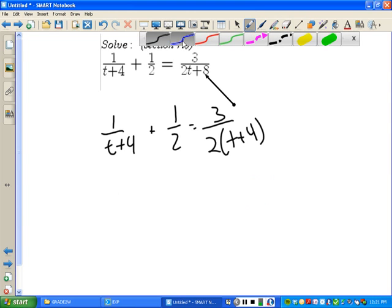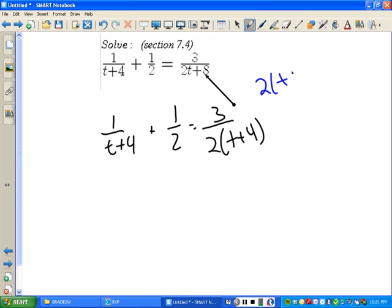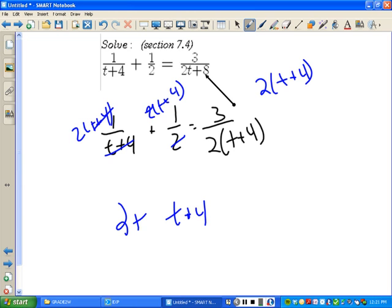You can now find a common denominator. It's 2T plus 4. The T plus 4s cancel. You're left with 2. Plus here, the 2 and 2 cancel. You're left with T plus 4. It's actually 1 times that. And then here, the 2 and the 2 and the T plus 4 and the T plus 4 all cancel. You're left with 3.